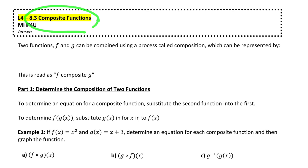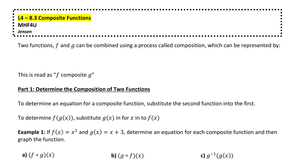Here's a lesson on composite functions, which are just functions of functions. So if we have two functions, let's say function f and function g, we can combine them using a process called composition, which can be represented using the following notation. We can write f composed of g by writing f, then an open circle, and then g of x.